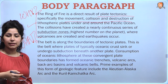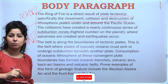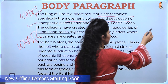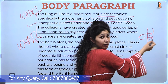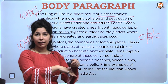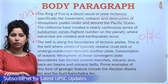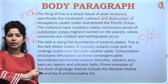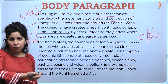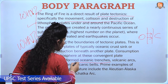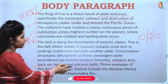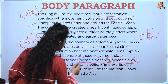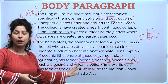The belt is along the boundaries of tectonic plates where plates of typically oceanic crust sink or undergo subduction beneath another plate. Since oceanic plates are denser and heavier, when a continental plate and an oceanic plate collide, the oceanic one subducts under the continental plate, creating subduction zones which give rise to volcanoes and earthquakes. Consumption of oceanic lithosphere at these convergent plate boundaries has formed oceanic trenches, volcanic arcs, back-arc basins and volcanic belts. Prime examples of island arcs include the Aleutian-Alaska arc and the Kuril-Kamchatka arc.